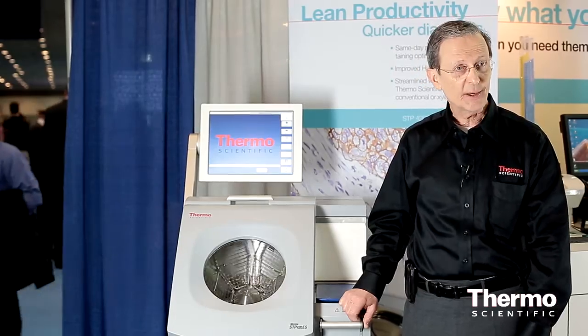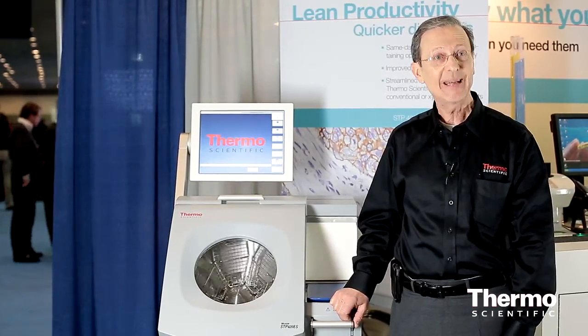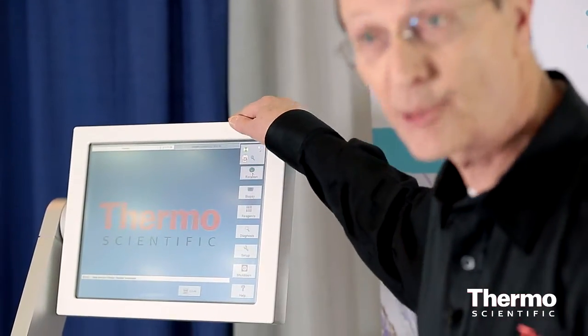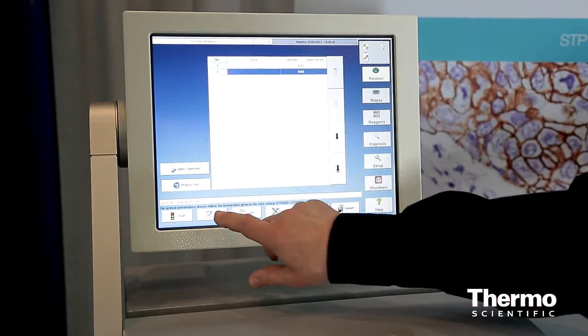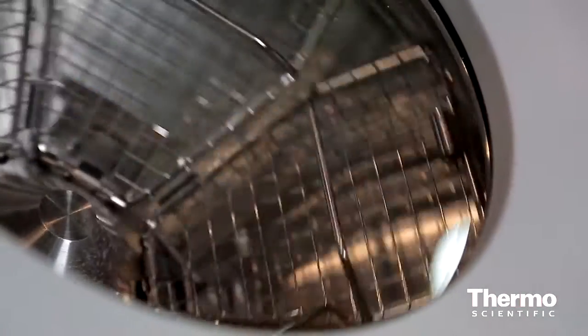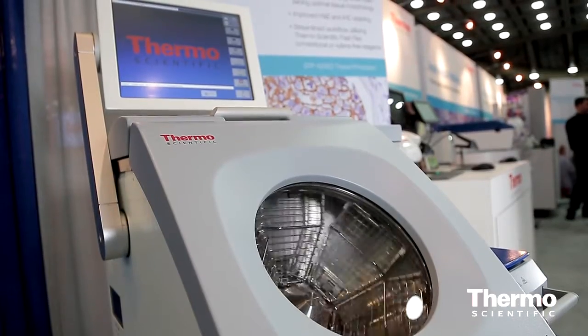This is the thermoscientific STP420ES rotational tissue processor. What's different about it is touch screen, very easy to use controls for the user, rotational agitation, that's a completely novel way of making sure that the tissue gets processed in the minimum time.